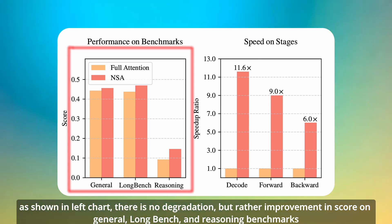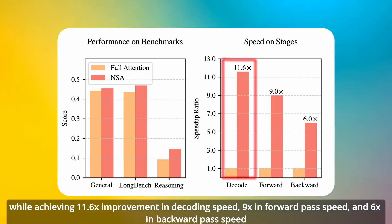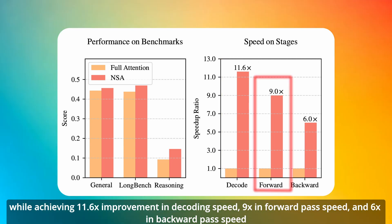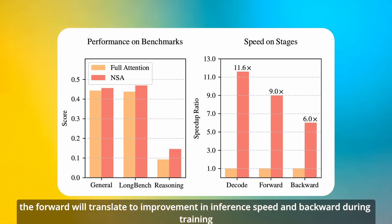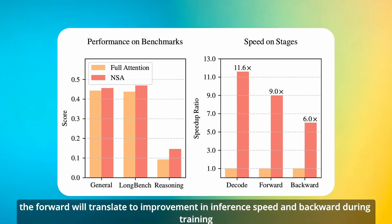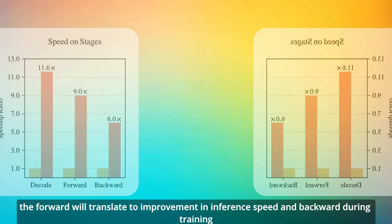All that while achieving 11.6x improvement in decoding speed, 9x in forward pass speed, and 6x in backward pass speed. The forward will translate to improvement in inference speed and backward during training.